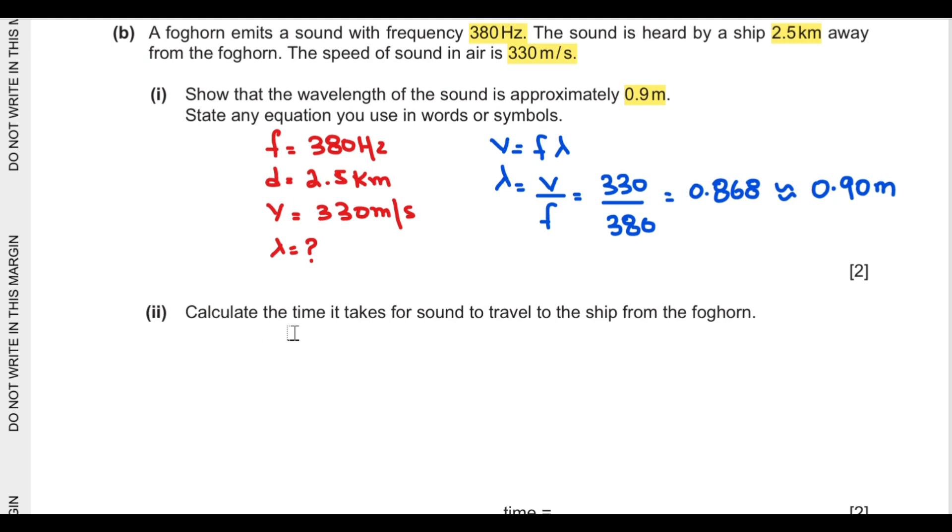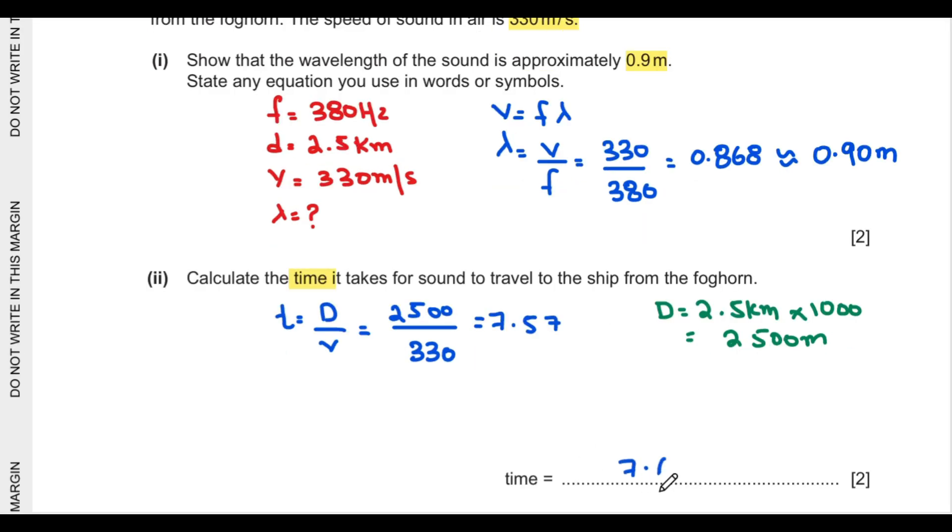Second question says calculate the time it takes for the sound to travel to the ship from the foghorn. For time we have the equation distance over speed, but there is mismatch in units. Distance is in kilometers so we convert to meters. 2.5 kilometers times 1000 equals 2500 meters. Distance is 2500 and speed is 330 meters per second. Dividing them, the time is 7.57 or 7.6 seconds.